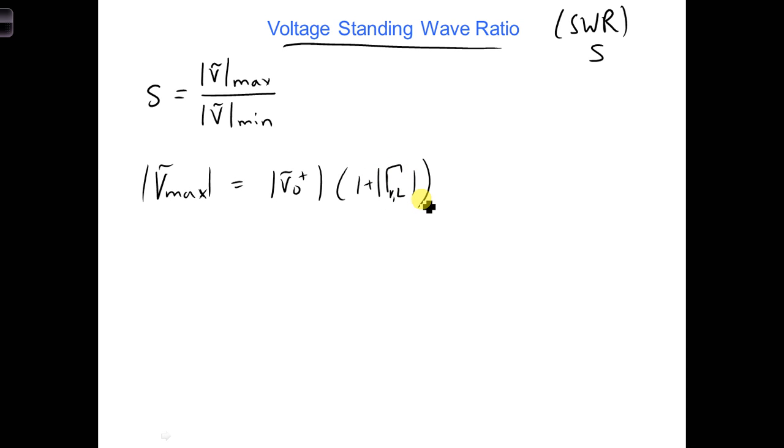And since Vmin occurs when the positive and negative voltage phasors are anti-parallel, we can write Vmin with just a minus sign, one minus.